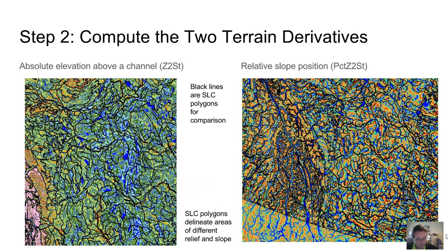This slide illustrates the two terrain derivatives on which the classification is based. These are Z to stream, which is elevation above a channel, and percent Z to stream, which is a measure of relative slope position. These variables require prior calculation of hydrological surface flow networks for the entire DEM. A slide is included in the online version of this presentation for anyone interested in knowing more about how these two terrain derivatives were computed.